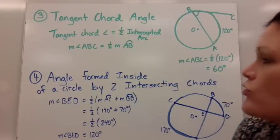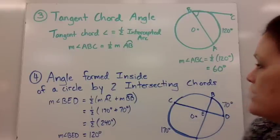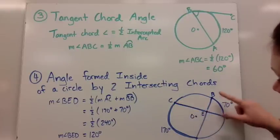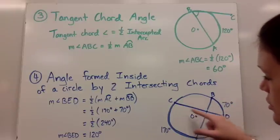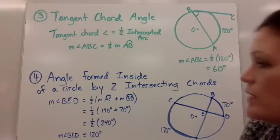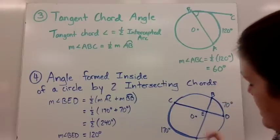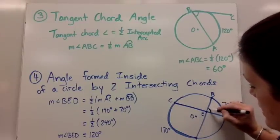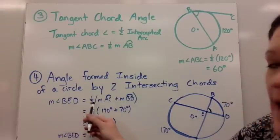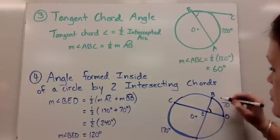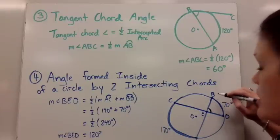Number four is an angle formed inside of a circle by two intersecting chords. So it looks like an X and it doesn't go through the center. And we have the measure of the angle we're looking for is angle BED. So right here,